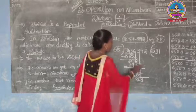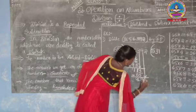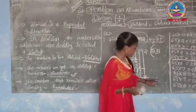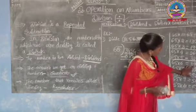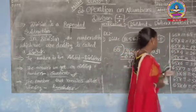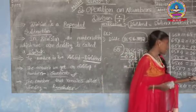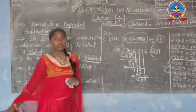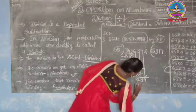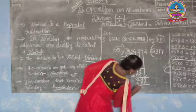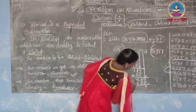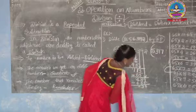Now we look for 489 in the table of 65. It is between 65×7=455 and 65×8=520. We take the smaller number — 65×7=455. Write 7 in the quotient and subtract: 9 minus 5 is 4, 8 minus 5 is 3, 4 minus 4 is 0. The result is 34. Bring down the last digit 2 to get 342.